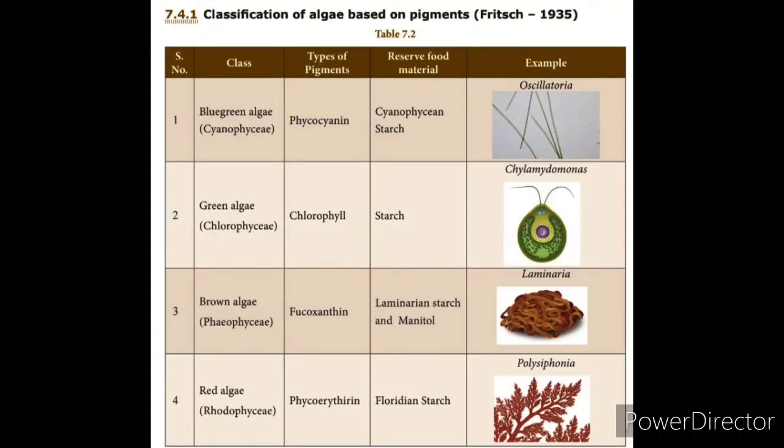Classification of algae based on pigments. In your book, four classes are given: blue-green algae, green algae, brown algae, and red algae.